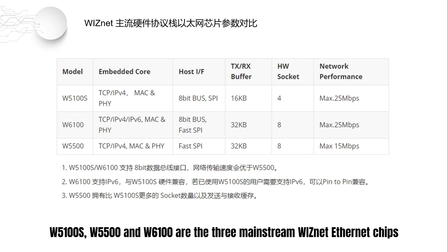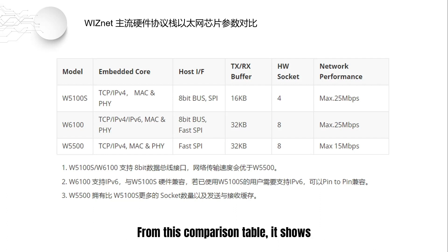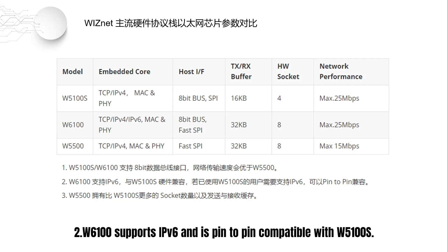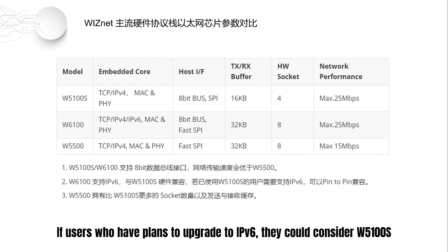W5100S, W5500, and W6100 are the three mainstream WIZnet Ethernet chips. From this comparison table: W5100S and W6100 support an 8-bit data bus interface, so network transmission speed will be better than W5500. W6100 supports IPv6 and is pin-to-pin compatible with W5100S, so users who have plans to upgrade to IPv6 could consider W5100S.